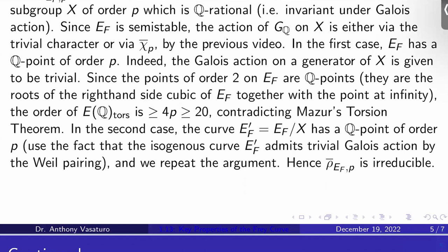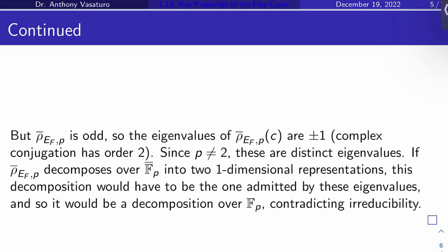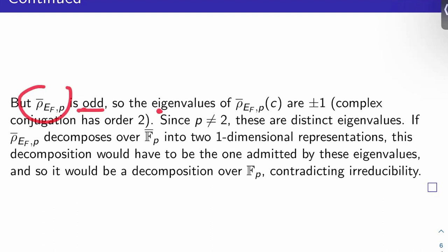Why is it absolutely irreducible? Here's a neat trick that you can use. Basically, since you have an odd representation, and since the prime P is at least 3, in fact it's at least 5. So here's the trick. ρ̄_E_F,P is odd, right? So the eigenvalues of the image of complex conjugation are plus or minus 1. You can use the fact that the determinant is negative 1, and that complex conjugation has order 2. That's a quick little exercise for you.